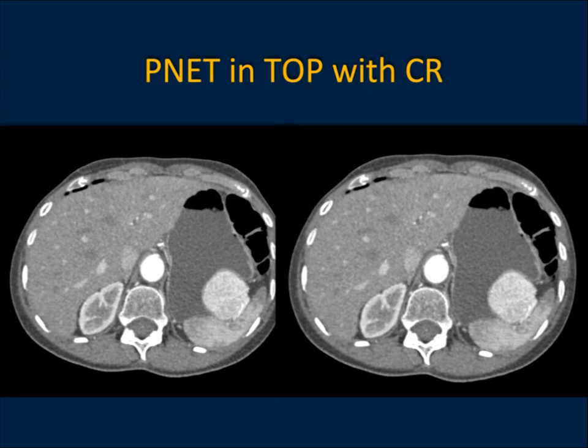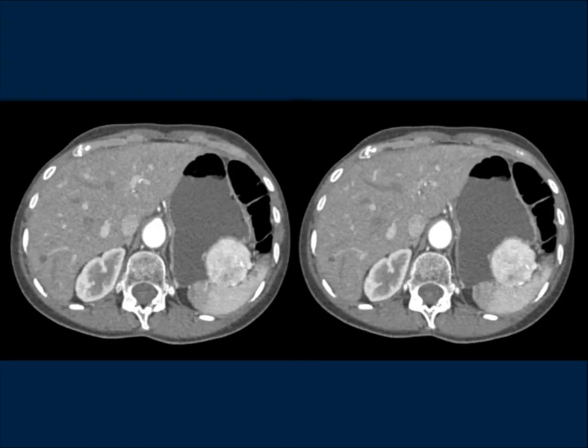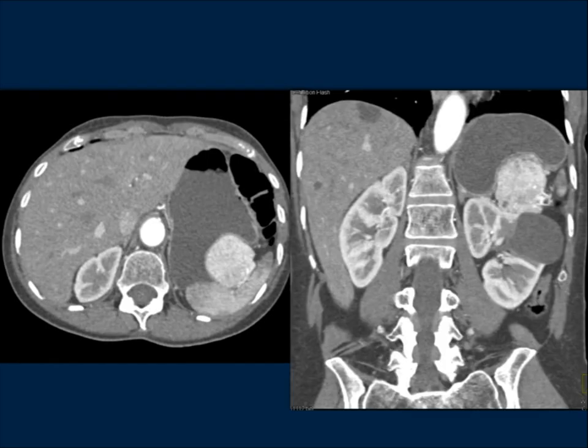Here's a good example: this is by the splenic hilum, and you want to say accessory spleen. But the point is, it's much brighter than the spleen on arterial phase — much brighter than the moiré pattern. There's no chance this is an accessory spleen. This is a neuroendocrine tumor off the tail of the pancreas. Sometimes people mistake a neuroendocrine tumor and call it an accessory spleen, so you can make this error in either direction.